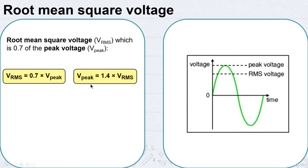These two equations also apply to current. It is important to note that these equations are only true for sine waves, which is the most common type of AC, because the 0.7 and the 1.4 factors are different values for other shapes.